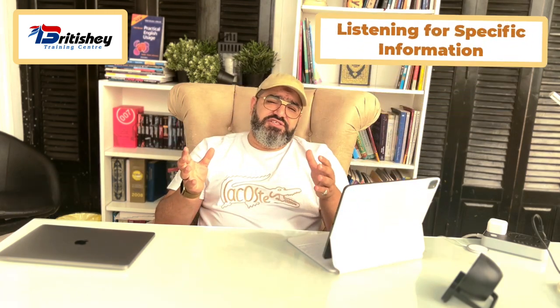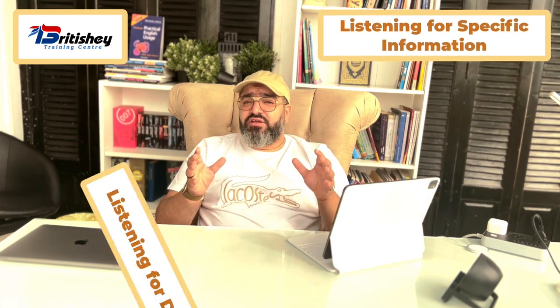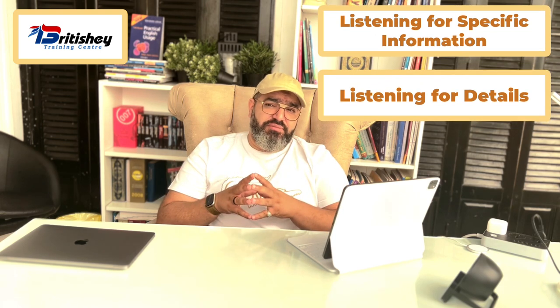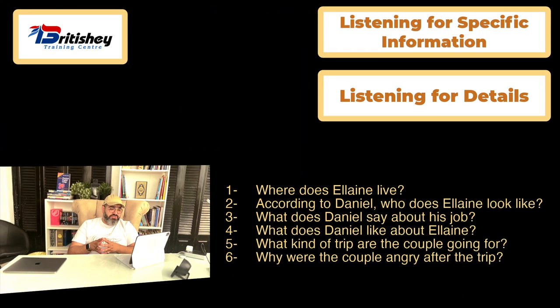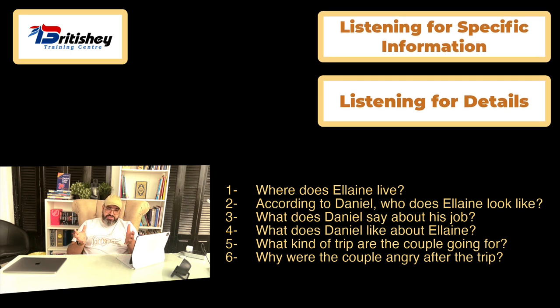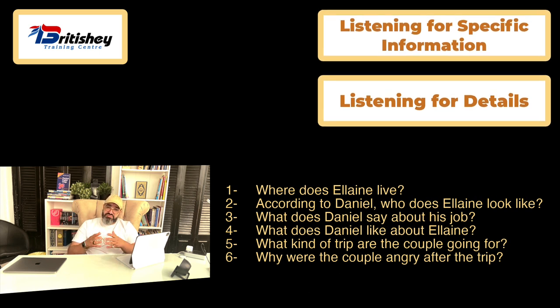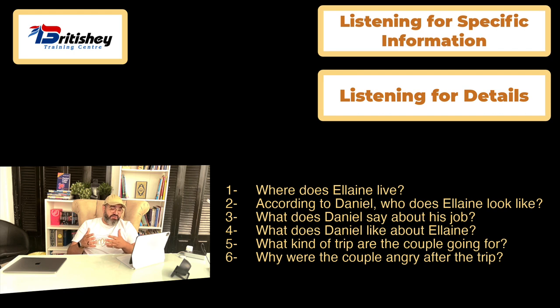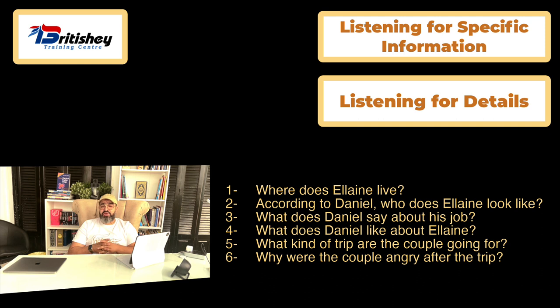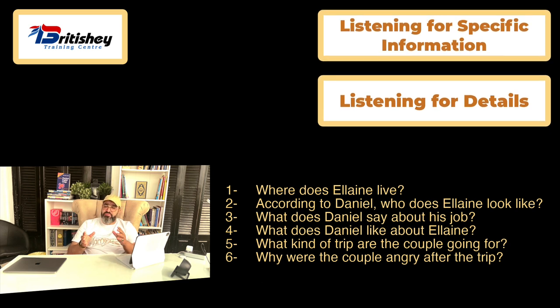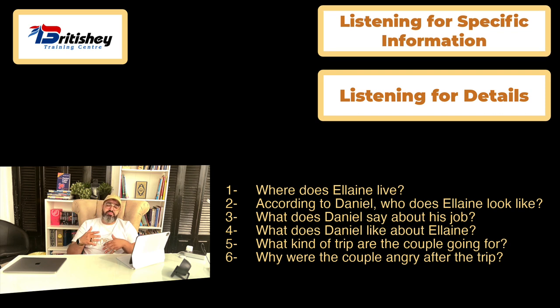After the gist listening task, I came up with questions focusing on both listening for specific information and listening for details. For specific information: where does Elaine live? According to Daniel, who does Elaine look like? Then questions three, four, five, and six focus on listening for details: what does Daniel say about his job? What does Daniel like about Elaine? What kind of trip are the couple going on? Why were the couple angry after the trip?